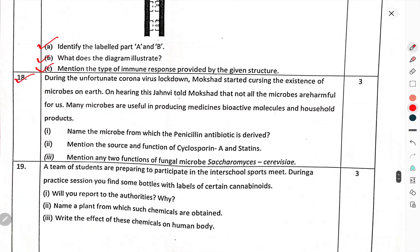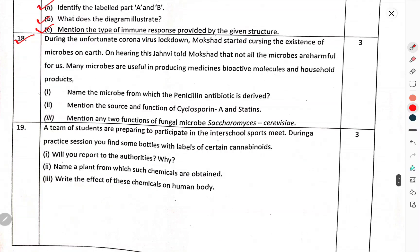During the coronavirus lockdown, Mohit started questioning the existence of microbes on earth. On hearing this, Janvi told Mohit that not all microbes are harmful for us. Many microbes are useful in producing medicine, bioactive molecules, and household products. Name the microbe from which penicillin antibiotics are derived. Mention the source and function of cyclosporine and statins. Mention any two functions of the fungal microbe Saccharomyces cerevisiae.